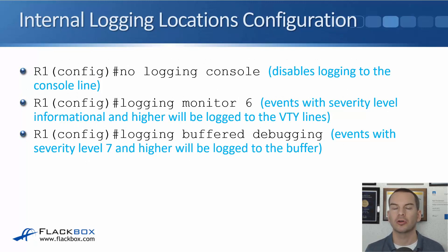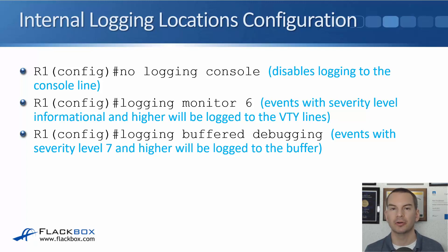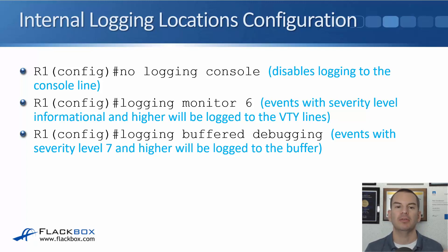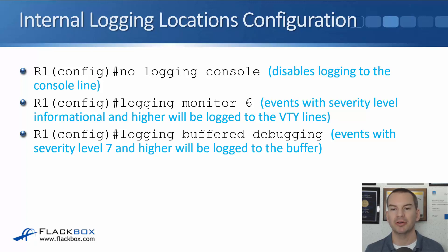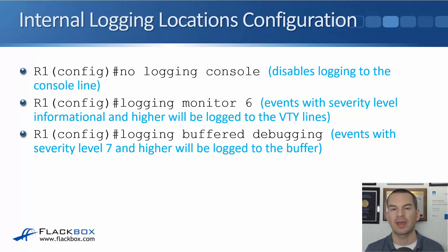Logging to the console is turned on by default. If you want to disable it, at global config use the command no logging console. For logging to the VTY lines for telnet and SSH connections, the command is logging monitor followed by the level — here we've said logging monitor 6, which is informational, so everything informational and higher would show up in your command line over a telnet or SSH session. For the RAM buffer the command is logging buffered debugging, which logs everything at level seven and higher.